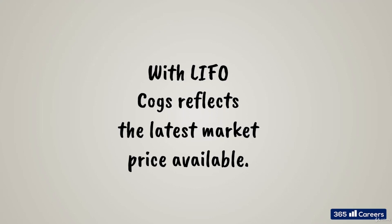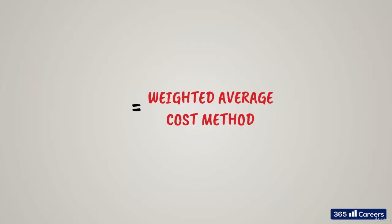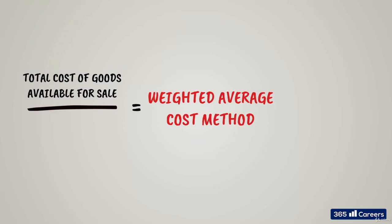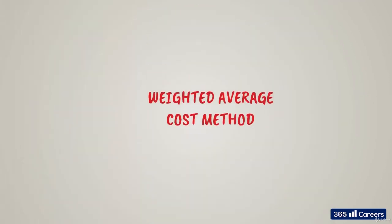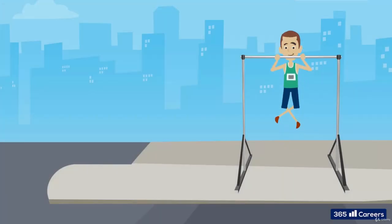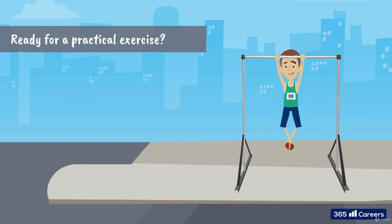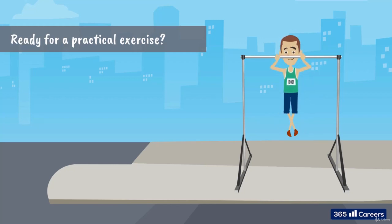Finally, according to the fourth cost flow principle, companies can choose the weighted average cost method, which consists of dividing the total cost of goods available for sale by the quantity available for sale. This gives us the unitary COGS of the product we are about to sell. The result is a value between FIFO and LIFO. These are the main cost flow methods companies use. Now we are ready for a practical exercise in which we can see how each method impacts the inventory and COGS value when prices change.